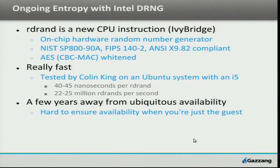One of my former colleagues, Colin King, tested this on an Ubuntu system. There are the specs put out with it, but he actually did this on a real system on his laptop. He was getting 40 to 45 nanoseconds per call, and each call gives back a 64-bit random number, which means he could do 22 to 25 million 64-bit random numbers per second. That's incredible performance out of a physical random number generator.